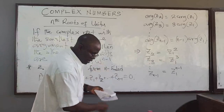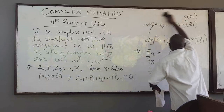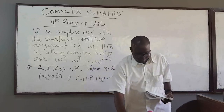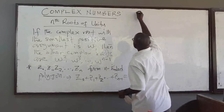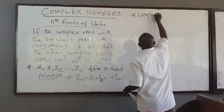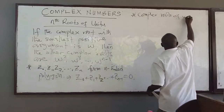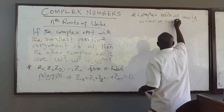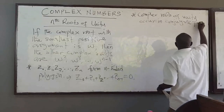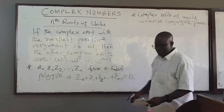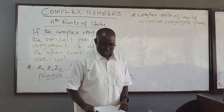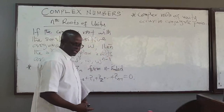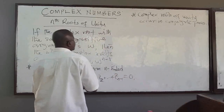Also, the complex roots of unity occur in conjugate pairs. We'll use a simple example to illustrate most of these concepts so that we get a deeper understanding of them.